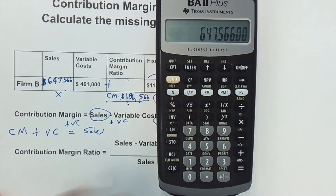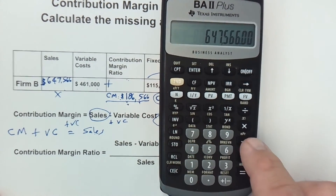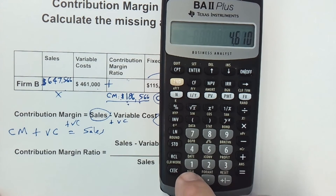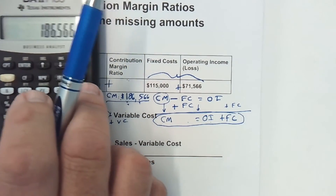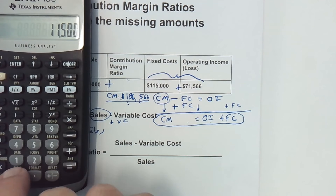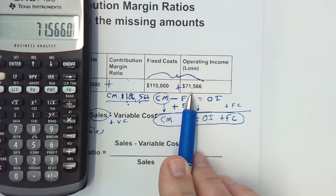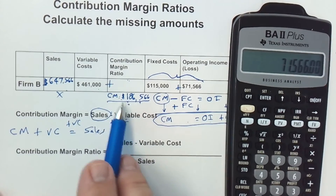That — $647,566 — is the amount of sales, and this makes sense. If that's our sales and we subtract out variable costs of $461,000, that gives us our contribution margin. Then we take our contribution margin and subtract our fixed costs and that gives us our operating income. That's how the information flows through, and that's why we can use these formulas to find the missing figures.